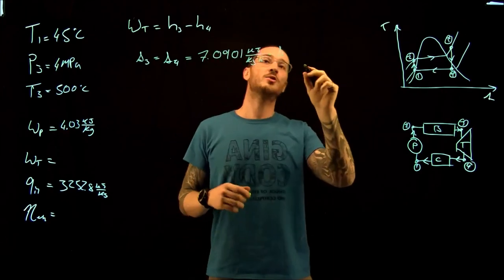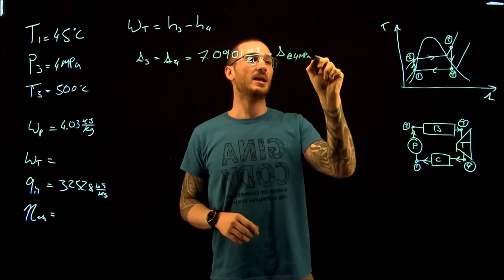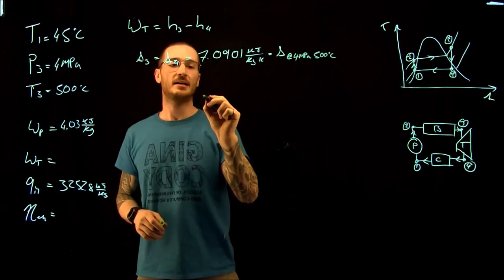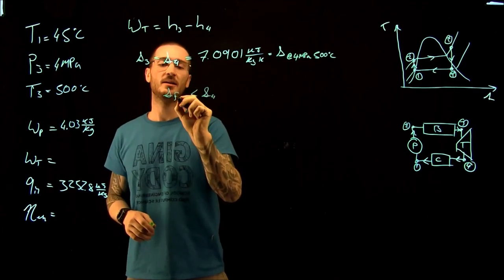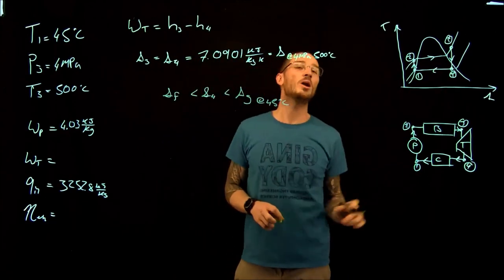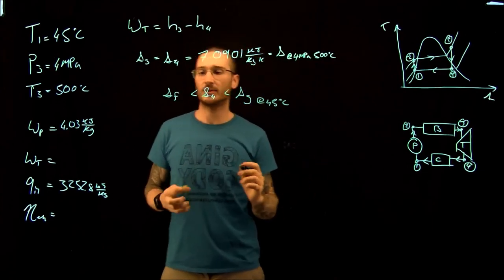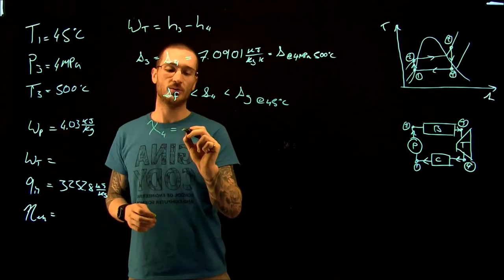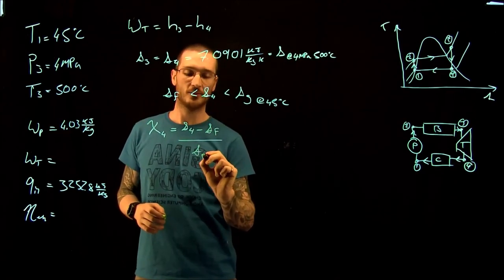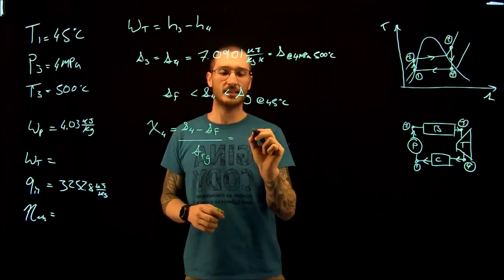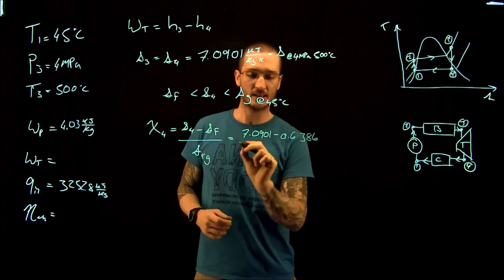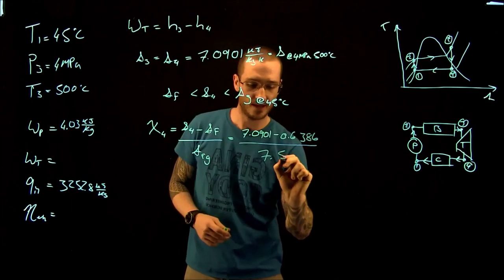Going to the saturated mixture tables, the entropy at point four is less than the entropy of a gas at 45°C but greater than the entropy of a liquid at 45°C, meaning we have a two-phase mixture at point four. The quality at point four is calculated as (s₄ − s_f) / s_fg = (7.0901 − 0.6386) / 7.5247.